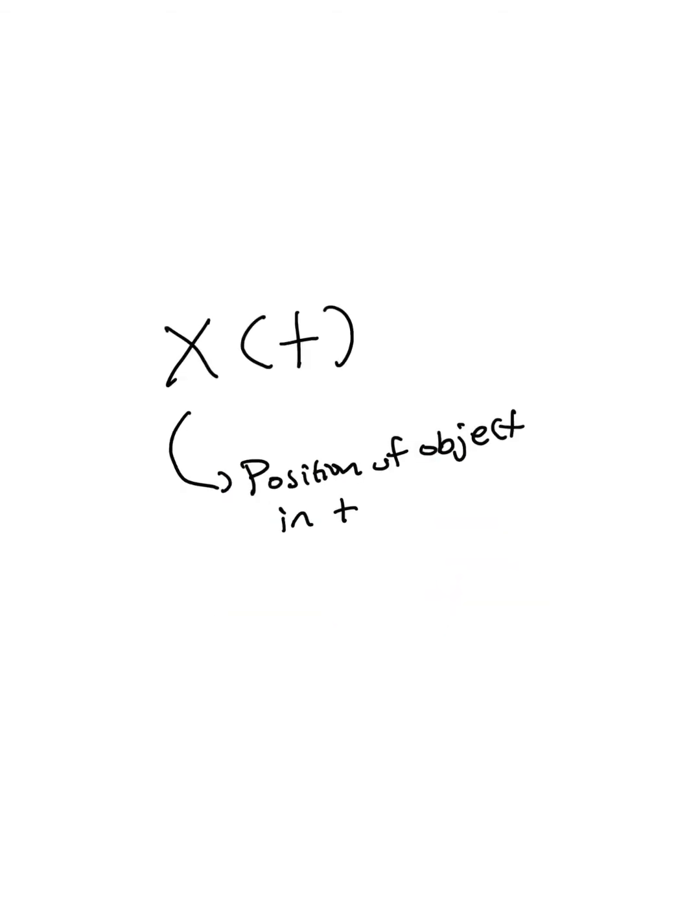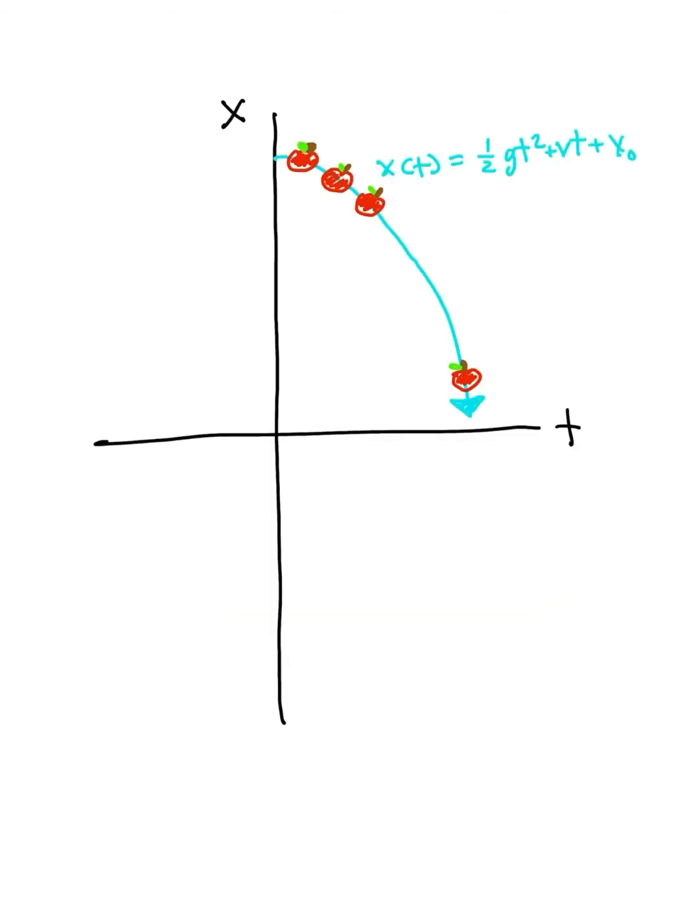In Newtonian mechanics, we use what is called physical space, since it takes place in the physical world we know and love. We use one axis for position and one axis for time. We track the motion of bodies as points in physical space, at some moment in time. If we had two objects, we would have two paths in physical space.